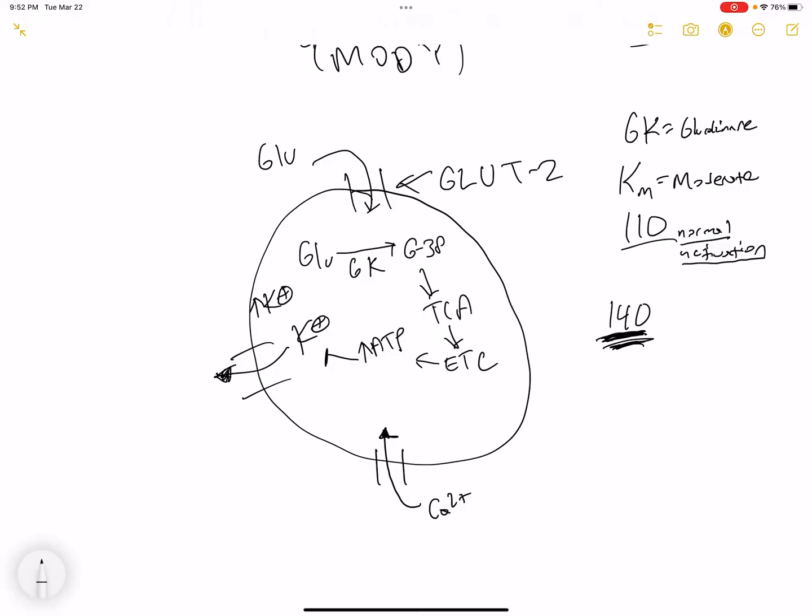And once these voltage-gated calcium channels open, calcium is going to freely move into the cell. And once calcium freely moves into the cell, it is going to result in the exocytosis of insulin as well as C-peptide.